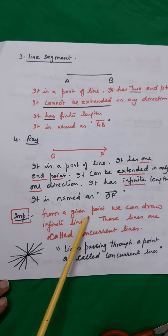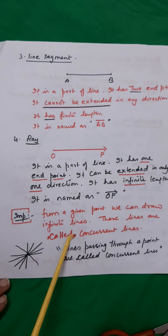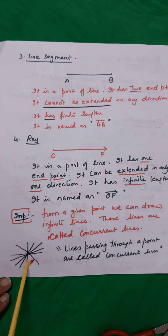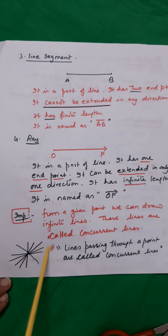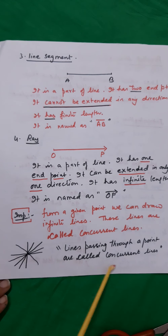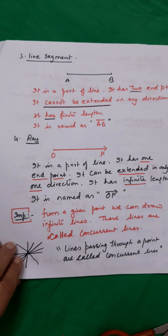From a given point, we can draw an infinite number of lines, as you can see here. All the lines which pass through one point are called concurrent lines.